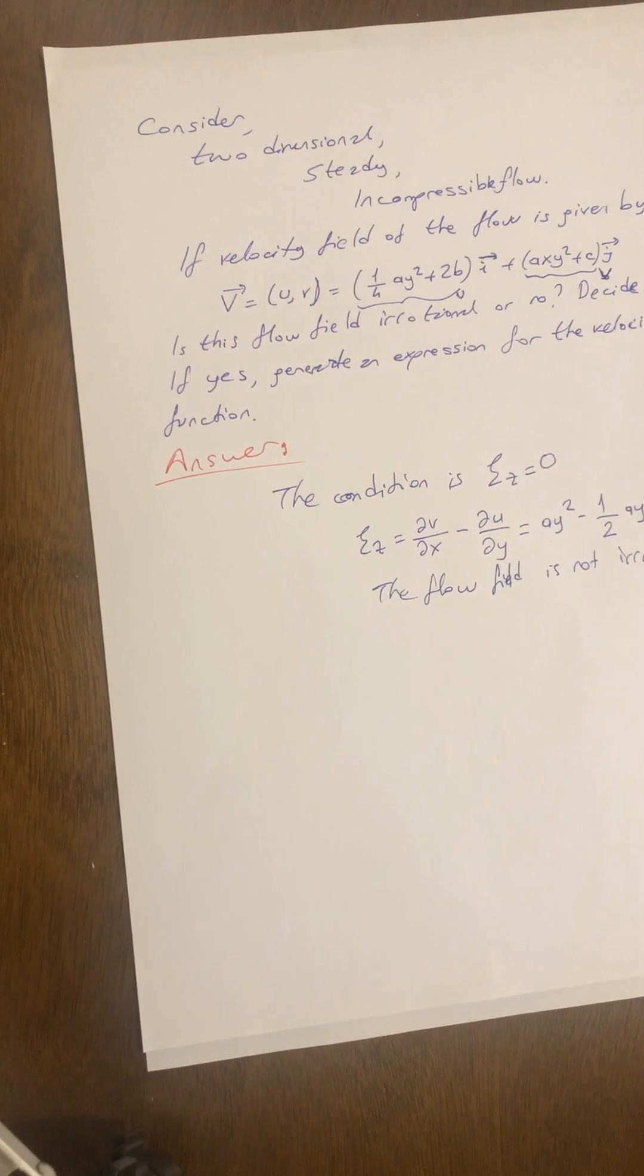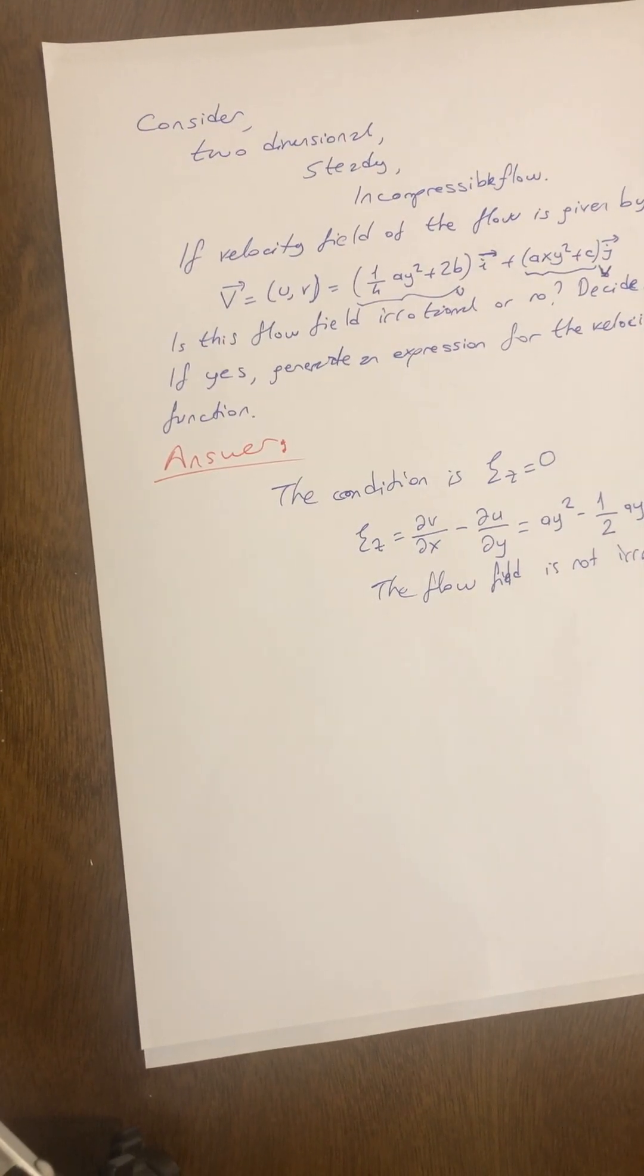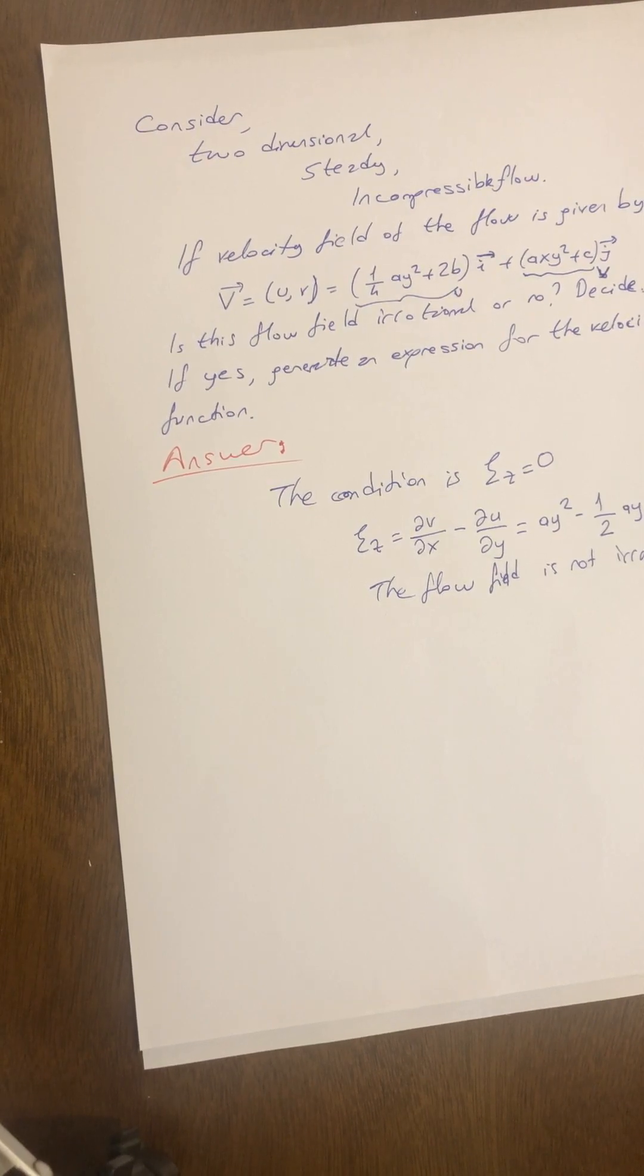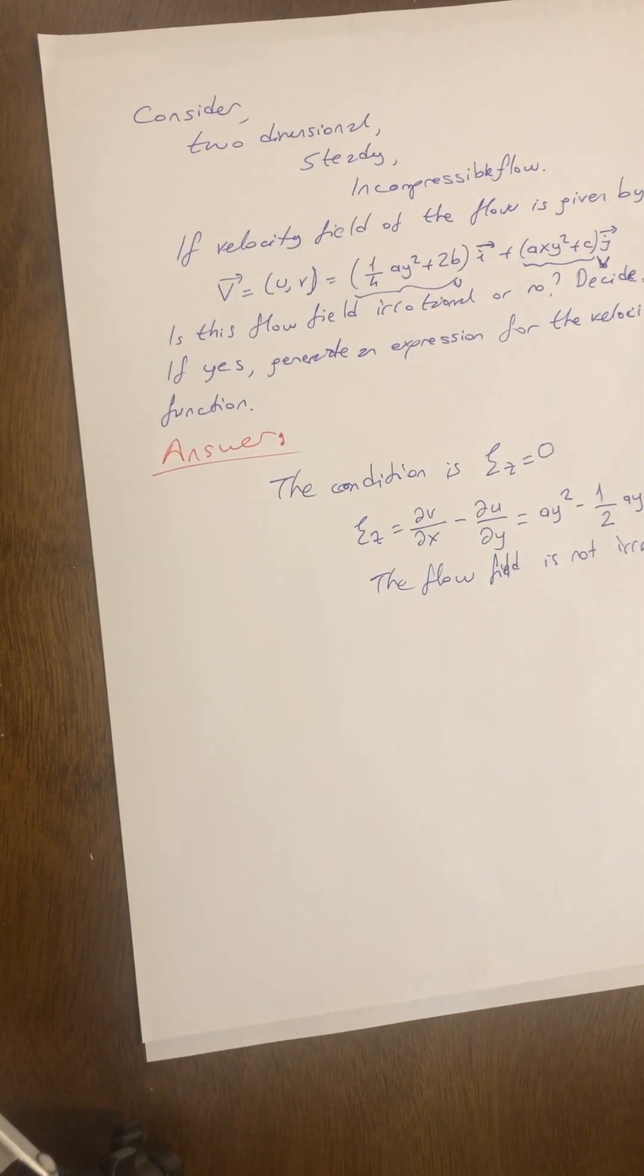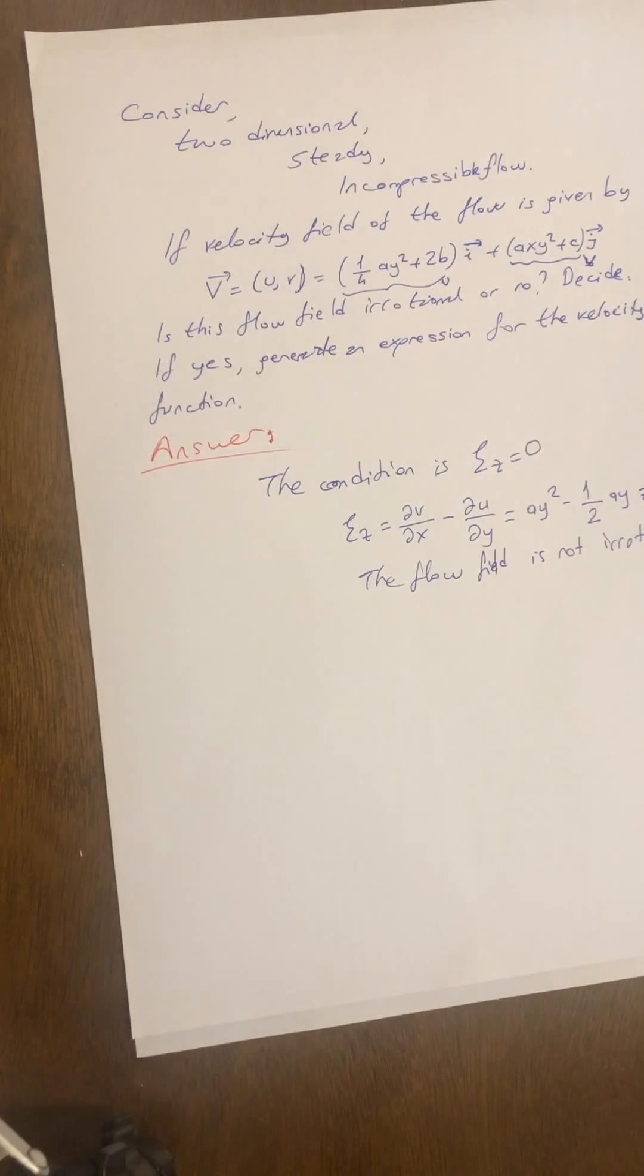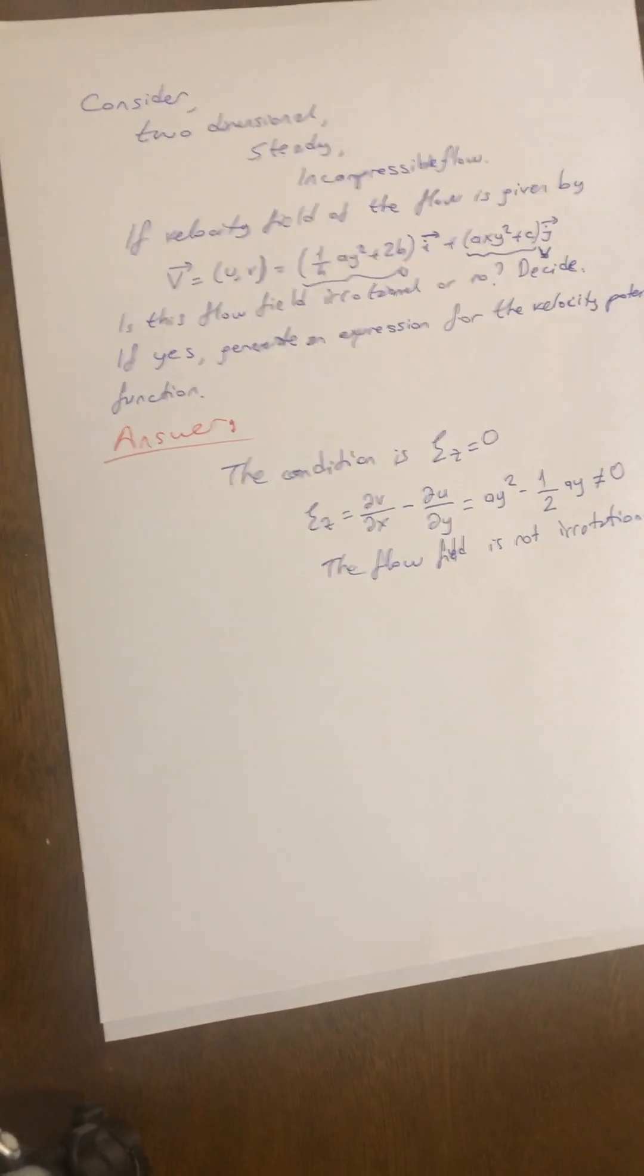If the flow field is not irrotational, then how can we generate an expression for the velocity potential function? It means that we cannot generate a velocity potential function for this question actually.